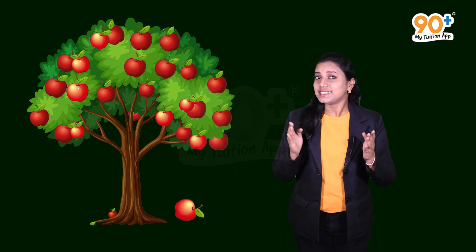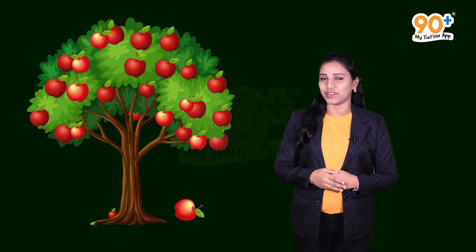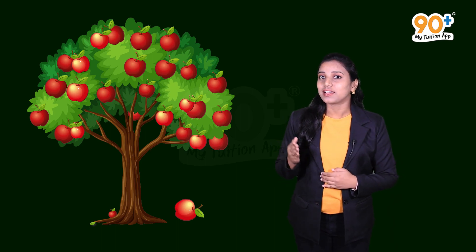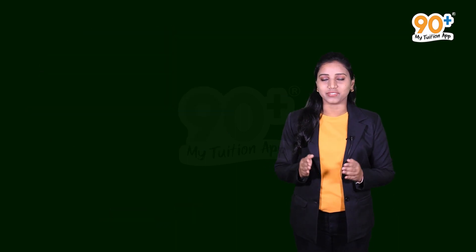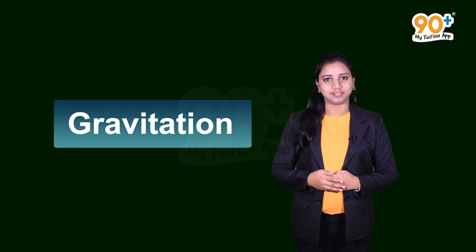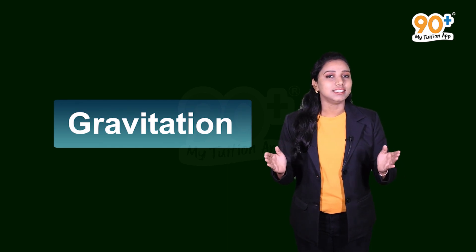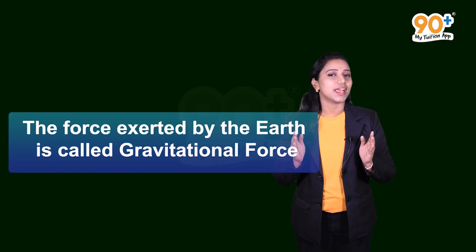Have a look here — fruits are falling down from the tree. Is there anyone pushing them down? No. Why are they coming down? Why don't they go up? The reason is gravitation — the earth attracts all objects towards its center. The force exerted by the earth is called gravitational force. This is an attractive force and also an example of non-contact forces.